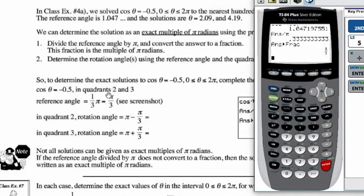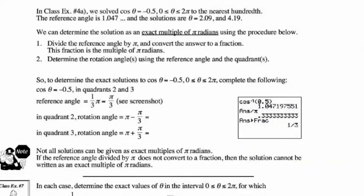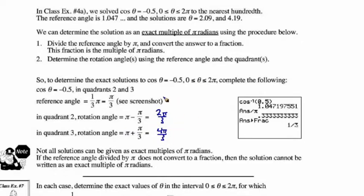This is very useful — finding the nice fractional part of pi radians gives a clean-looking answer. However, not all solutions can be given as an exact multiple of pi radians. If we can't convert the decimal to a fraction after dividing by pi, then we can't write the solution as an exact multiple of pi radians.